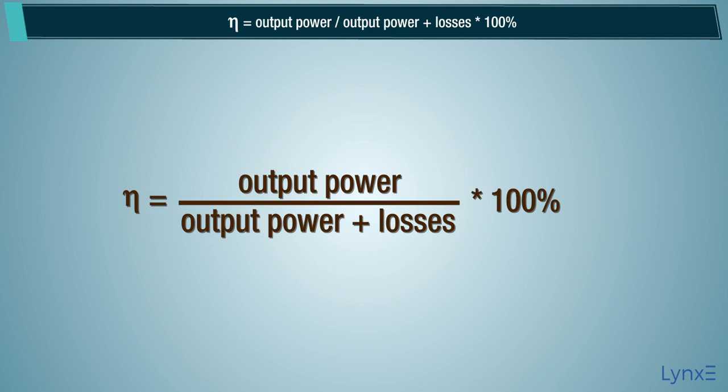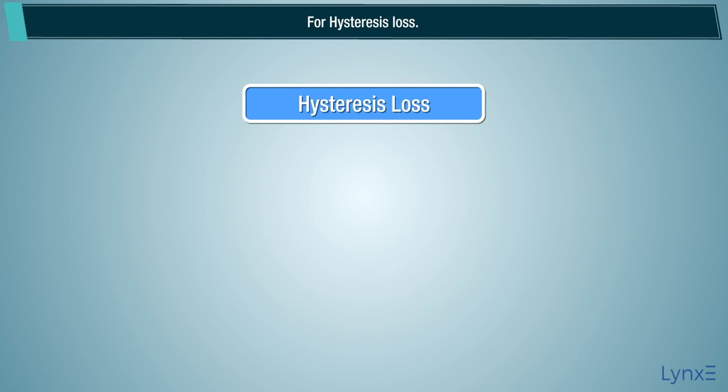For hysteresis loss, PH equals KH into Bmax to the power of 1.6 into F into V.